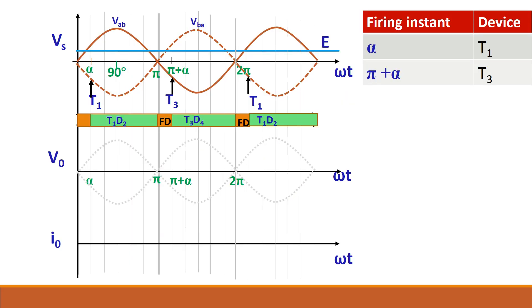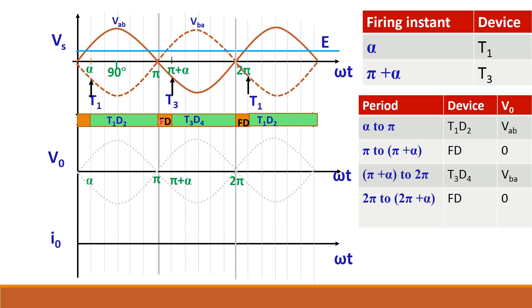Let us see the output voltage waveform. Here this is the supply voltage waveform. And at instant alpha we are giving the firing pulse for T1 and at pi plus alpha we are giving the pulse for T3. During positive half cycle that is VAB D2 is already forward biased and when you give the gate pulse for T1, T1 and D2 will carry the load current. At pi what happens this freewheeling diode will be forward biased and it starts to carry the motor current. So in such case this thyristor will be turned off automatically and diode also turns off automatically. And here at pi plus alpha when you give the gate pulse for T3, D4 will be already forward biased during the negative half cycle. So T3 and D4 will start conduction.